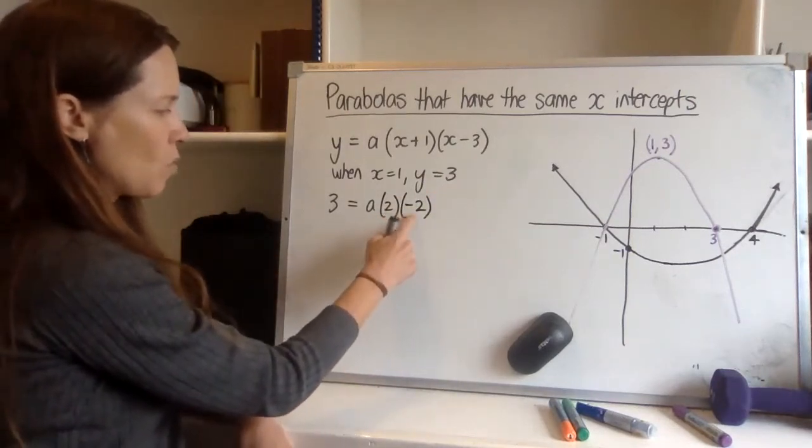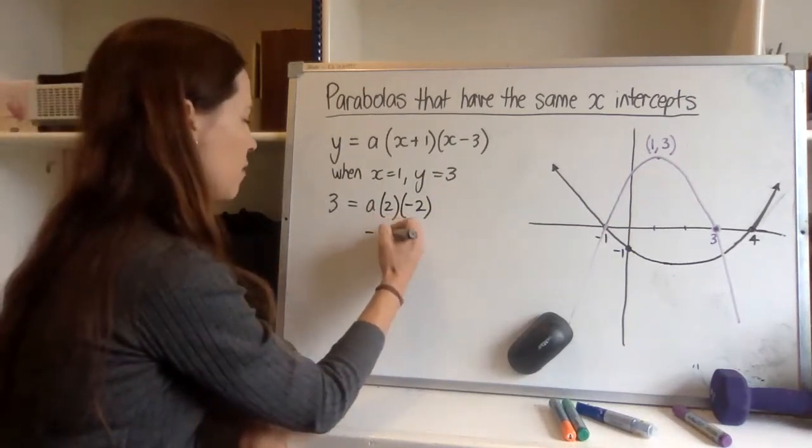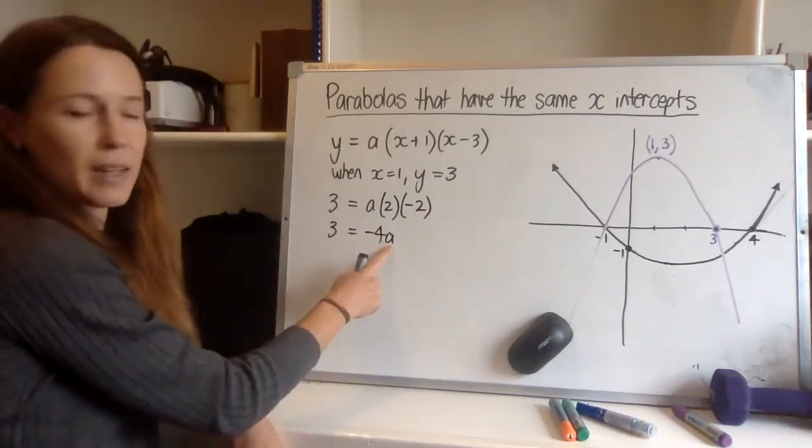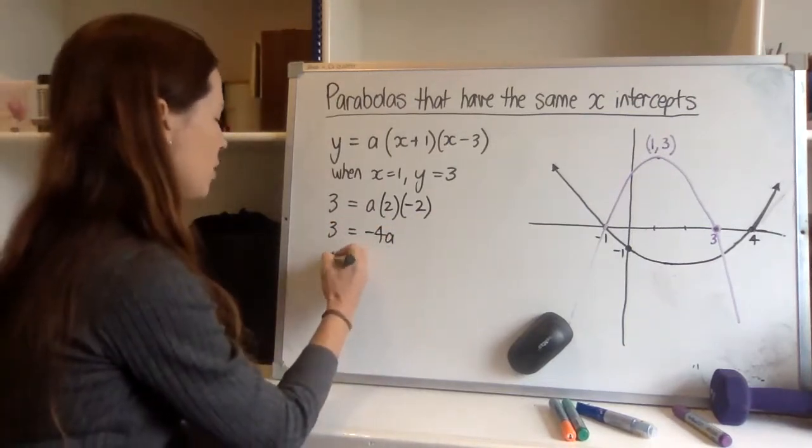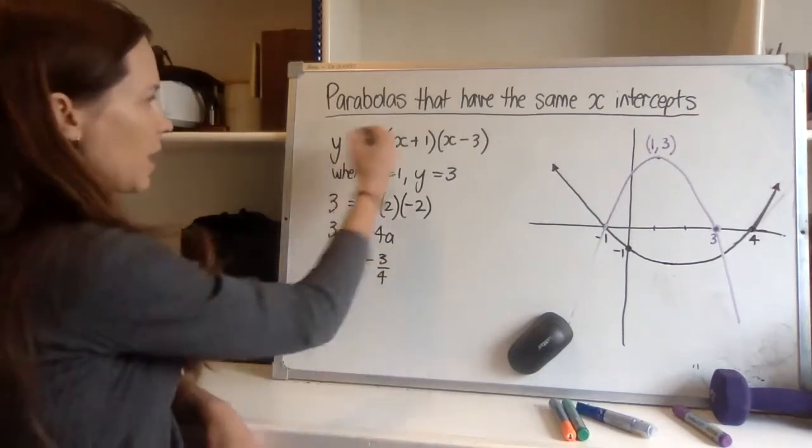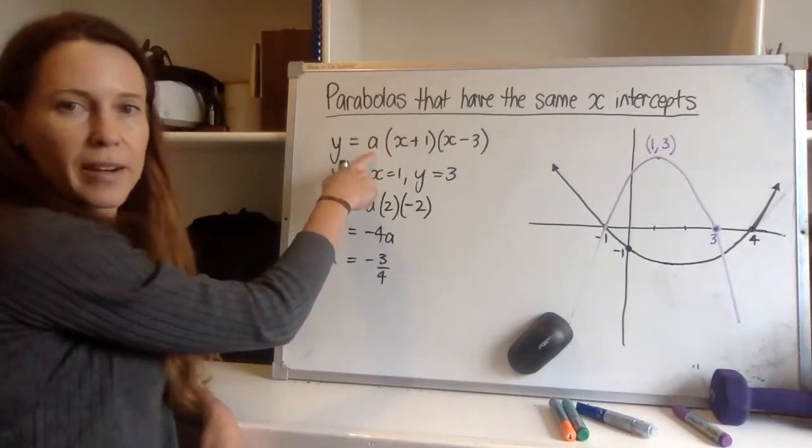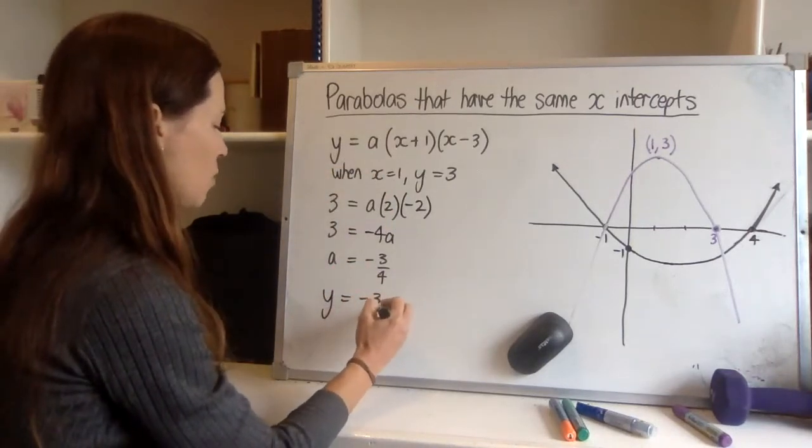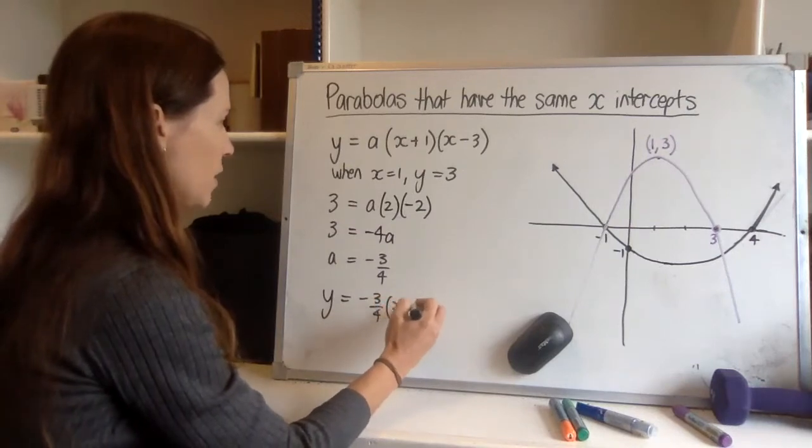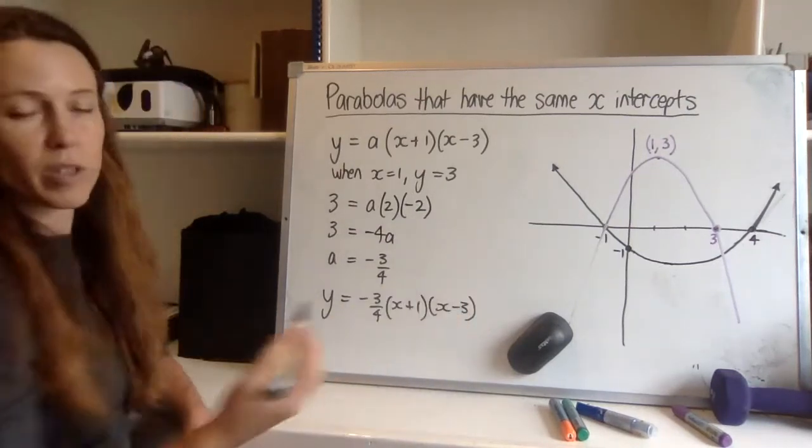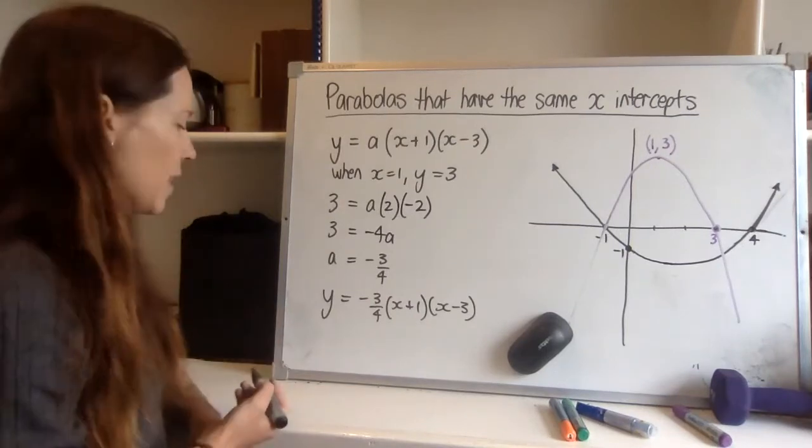Now I've got negative four times a, so negative four a is equal to three. So if I want to find a, just divide both sides by negative four and I've got a equals negative three quarters. Now I can go ahead and rewrite this but instead of that unknown being there I can put in my value of a that I've just found: negative three quarters times x plus one times x minus three. And again if I wanted to I could expand it out and get it into that other form.